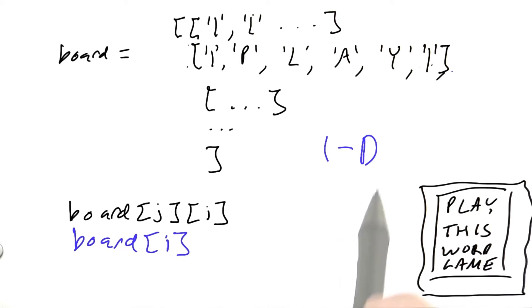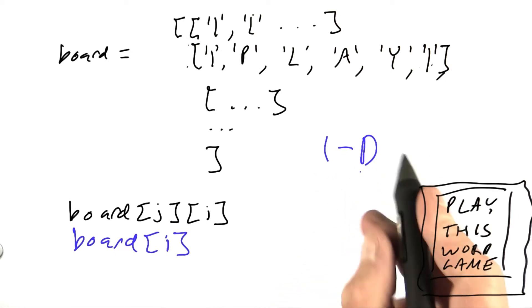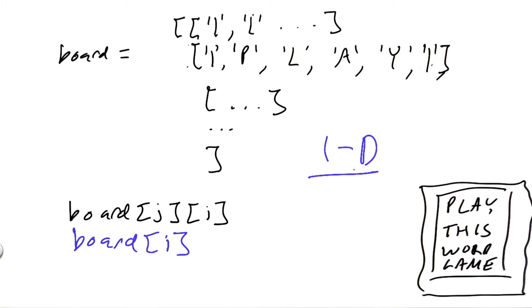Now why is that better? Why is it better to have a one-dimensional array to represent an inherently two-dimensional object? Seems like a step backwards. Well, one thing is that now we can have a position in the array represented by a single object, by an integer, rather than by a pair of integers that have to be broken up to subscript into the board. So that's one advantage.